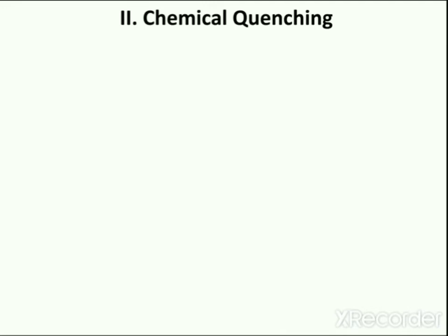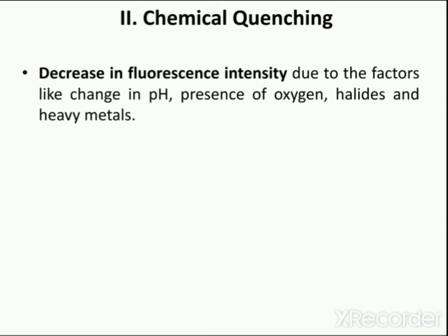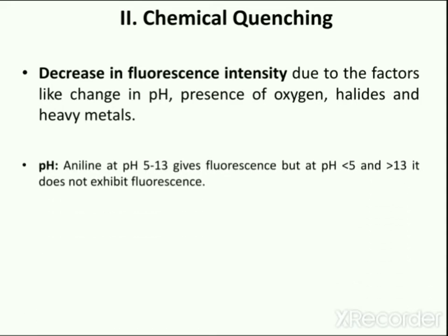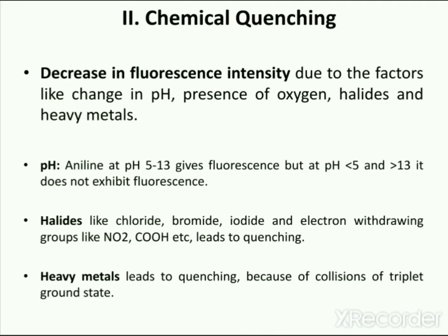The second type is chemical quenching, which occurs due to factors like change in pH, presence of oxygen, halides, and heavy metals. For example, aniline at pH 5 to 13 gives fluorescence, but at pH less than 5 or greater than 13 it does not exhibit fluorescence. Presence of halides like chloride, bromide, iodide, and electron-withdrawing groups like nitro and carboxylic groups leads to quenching. Heavy metals also cause quenching.